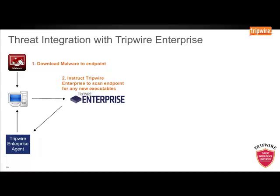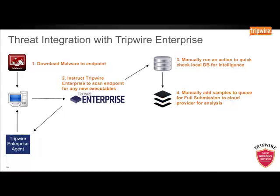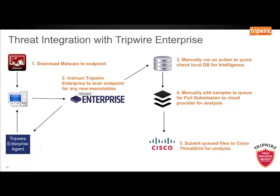We are then going to instruct Tripwire to scan the endpoint for any new executables. Once we have detected the new files, we are going to manually run an action to check if the files have been seen before in our local database. We will then add the files to a queue to be submitted to the threat provider for analysis. This step can be configured to submit the file to the provider in real-time, removing the requirement to queue the process. We will then execute a script in Tripwire Enterprise to send the files to Cisco Threat Grid for analysis. Once analysed, we will show the files as a threat within Tripwire Enterprise along with the report information from Cisco. Let's begin the demo.